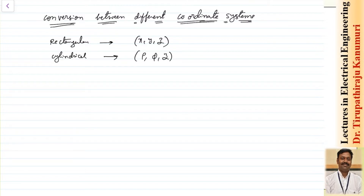The last one we have seen is the spherical coordinate system. In the spherical coordinate system, the sphere is represented by the radius and the value of theta — with respect to the z-axis — and phi. These are the coordinates. So let us see how to convert from one coordinate system to another.